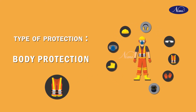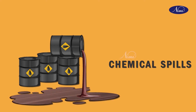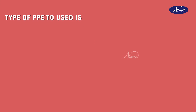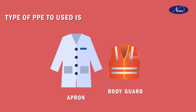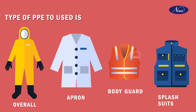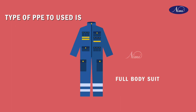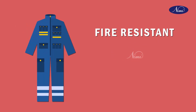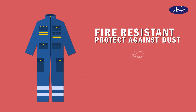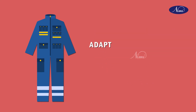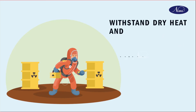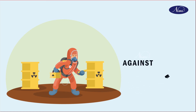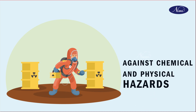The next type of protection is body protection. The hazards are due to heat particles or chemical spills. The types of PPE to be used are aprons, body guards, overalls, splash suits, and full body suits. It should be fire resistant and protect against dust, abrasions, rough and irritating surfaces, and it should adapt well to changing temperatures. It helps to withstand dry heat and flames and works against chemical and physical hazards.